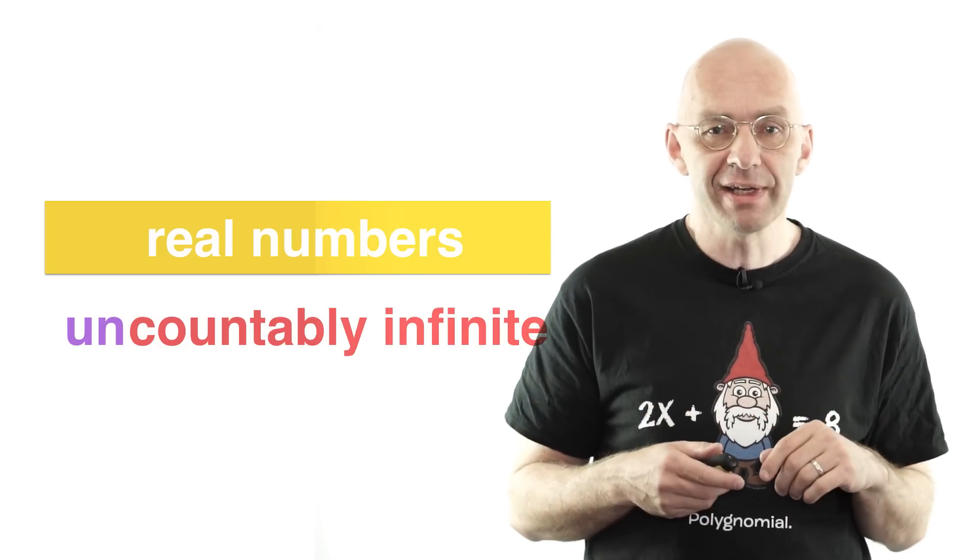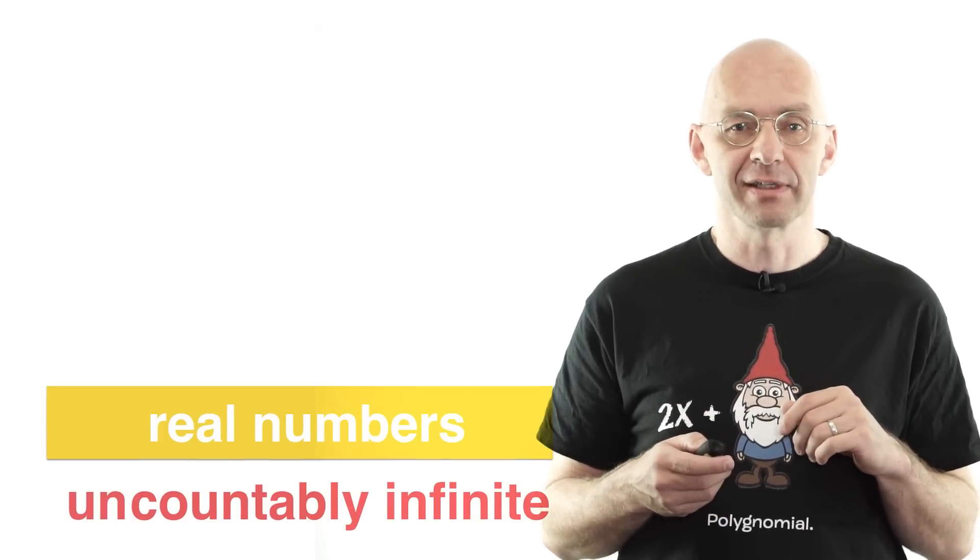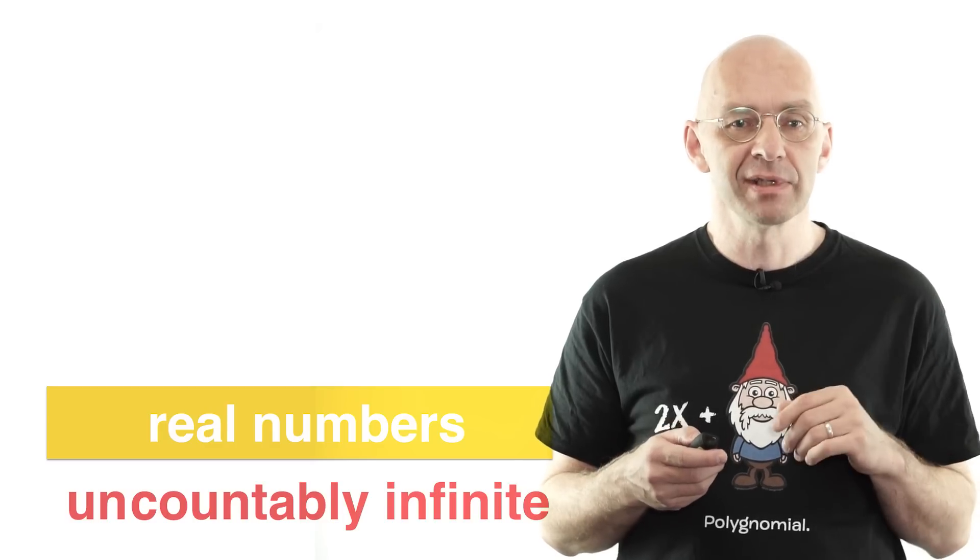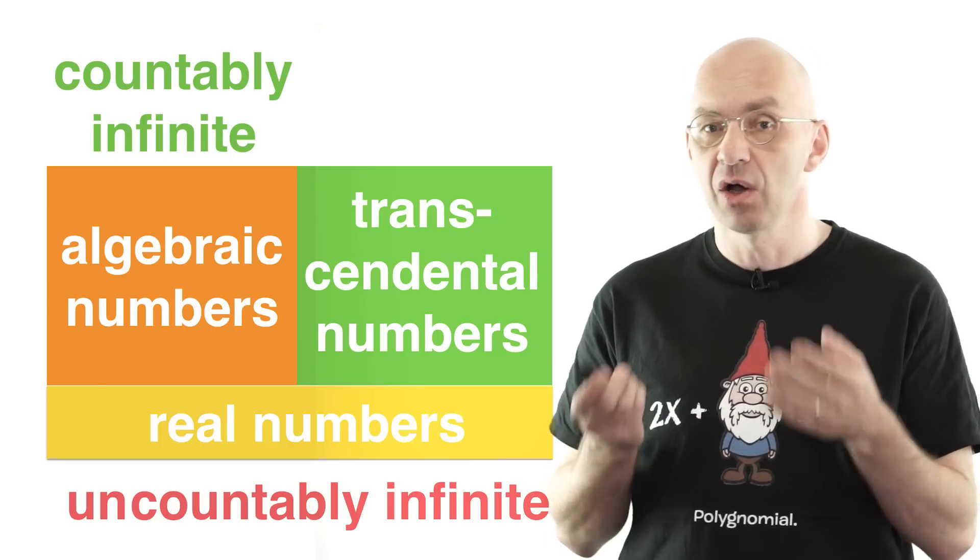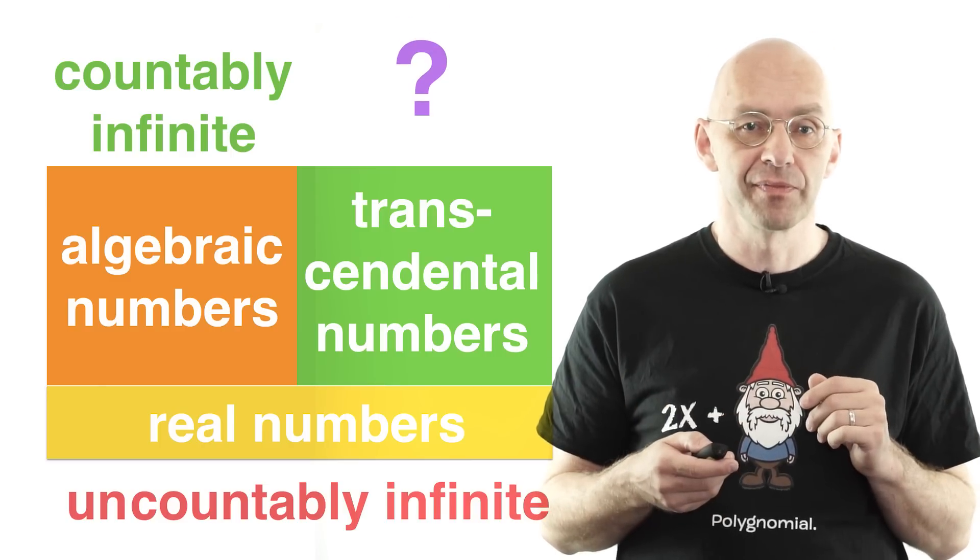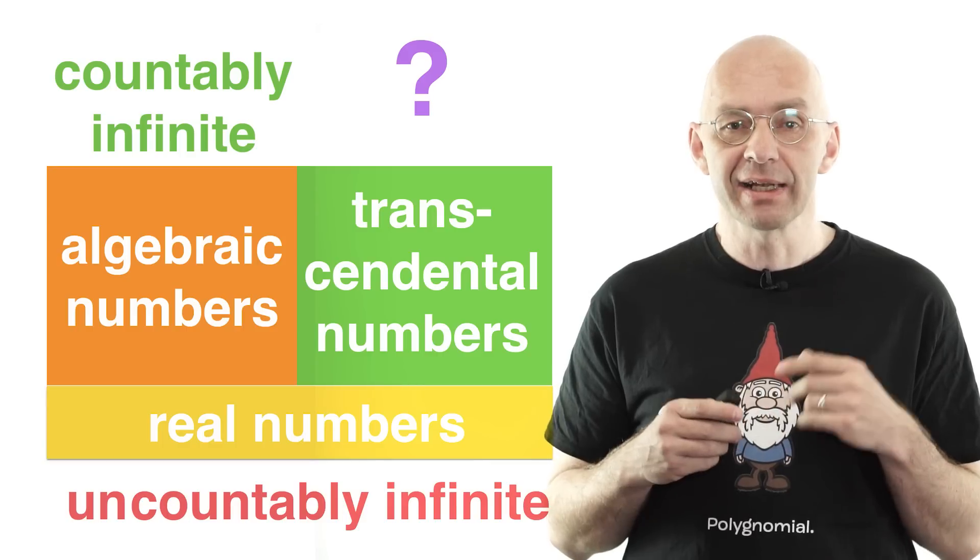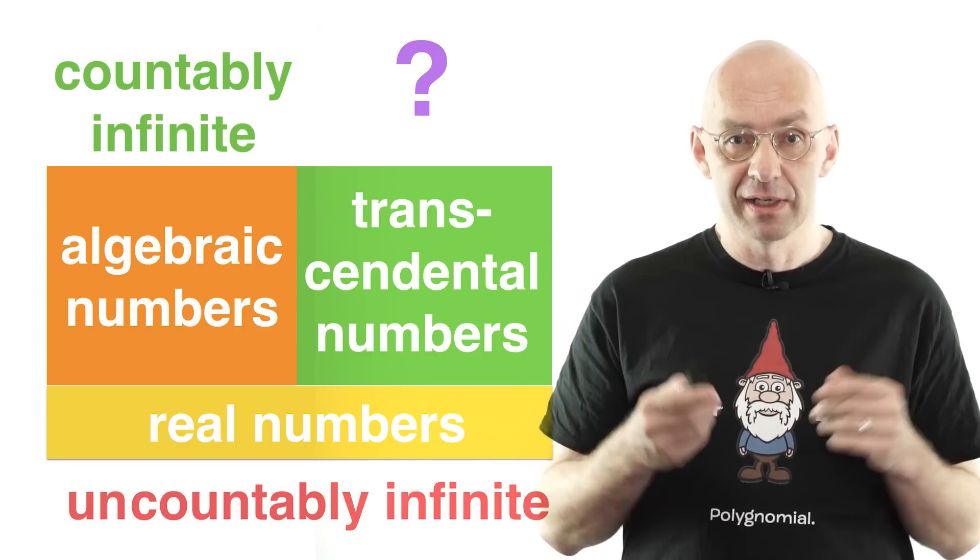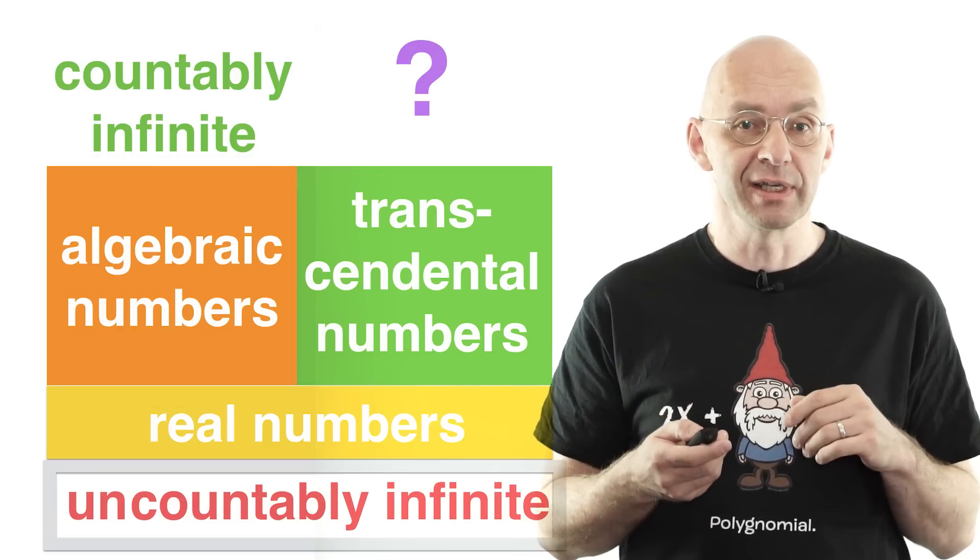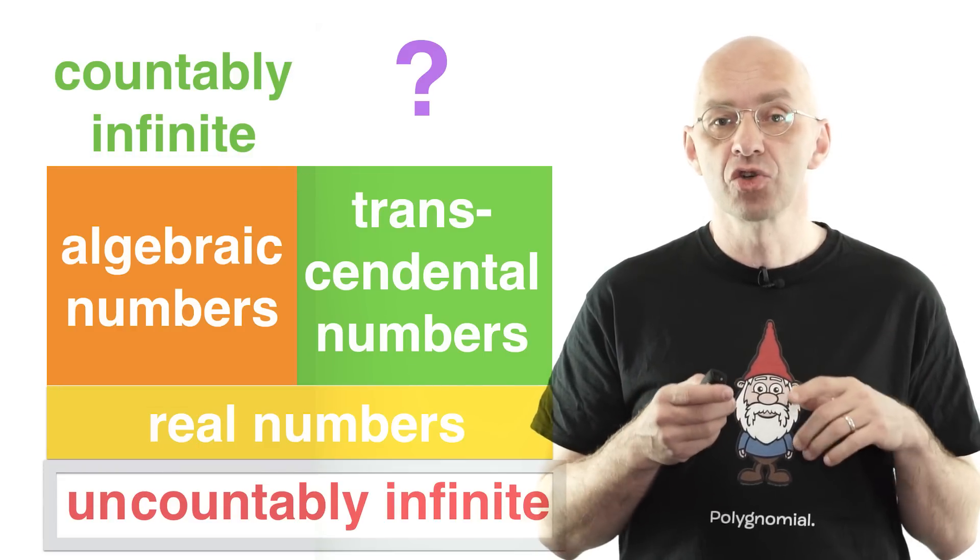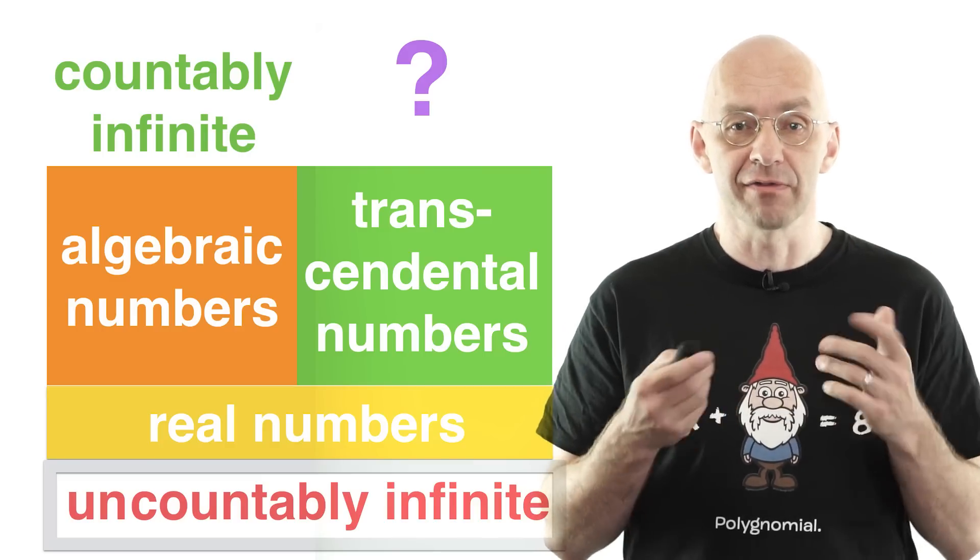Okay, so the real numbers are uncountably infinite, and the algebraic numbers are countably infinite. What about the transcendental numbers? Are they countably infinite or uncountably infinite? Well, since the transcendental numbers complement the countably infinite set of algebraic numbers to the uncountably infinite set of real numbers, it should be uncountably infinite itself. Right?